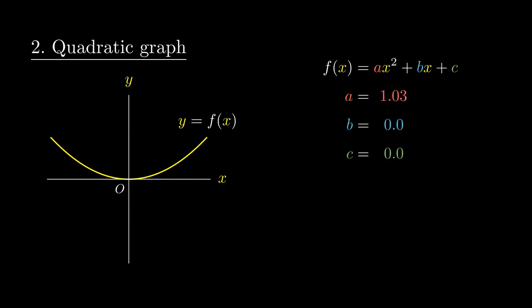If we were to change the number a, the graph would get stretched vertically. If instead the number a is negative, the u would get reflected about the x-axis giving us an inverted u.